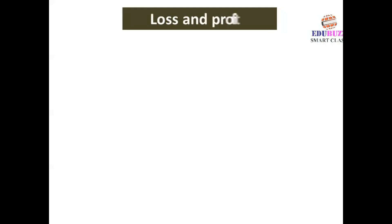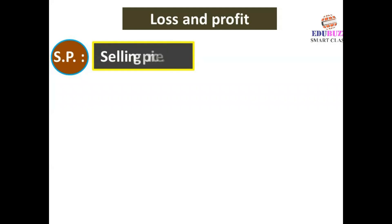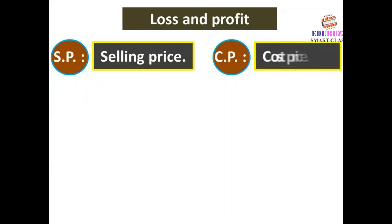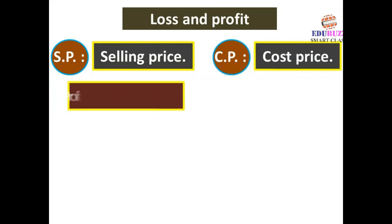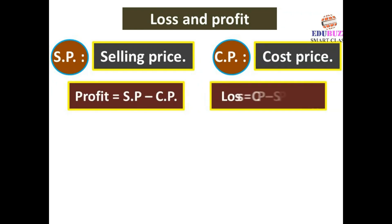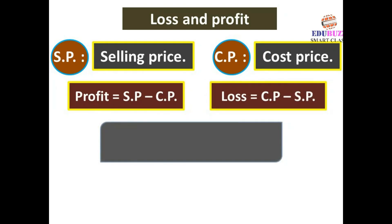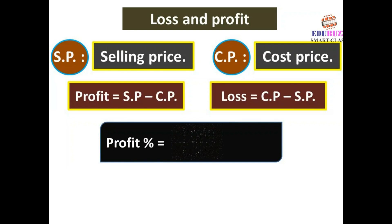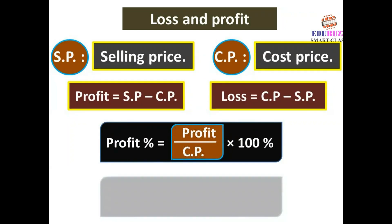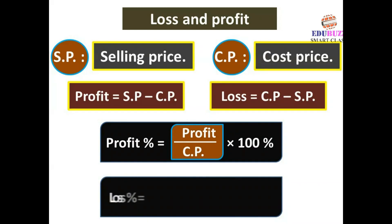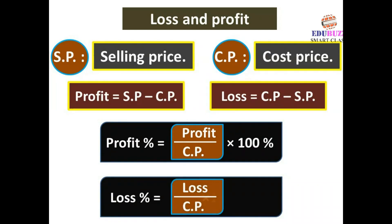Profit and Loss: S.P. = Selling Price, C.P. = Cost Price. Profit = Selling Price − Cost Price. Loss = Cost Price − Selling Price. Profit Percentage = (Profit ÷ Cost Price) × 100%. Loss Percentage = (Loss ÷ Cost Price) × 100%.